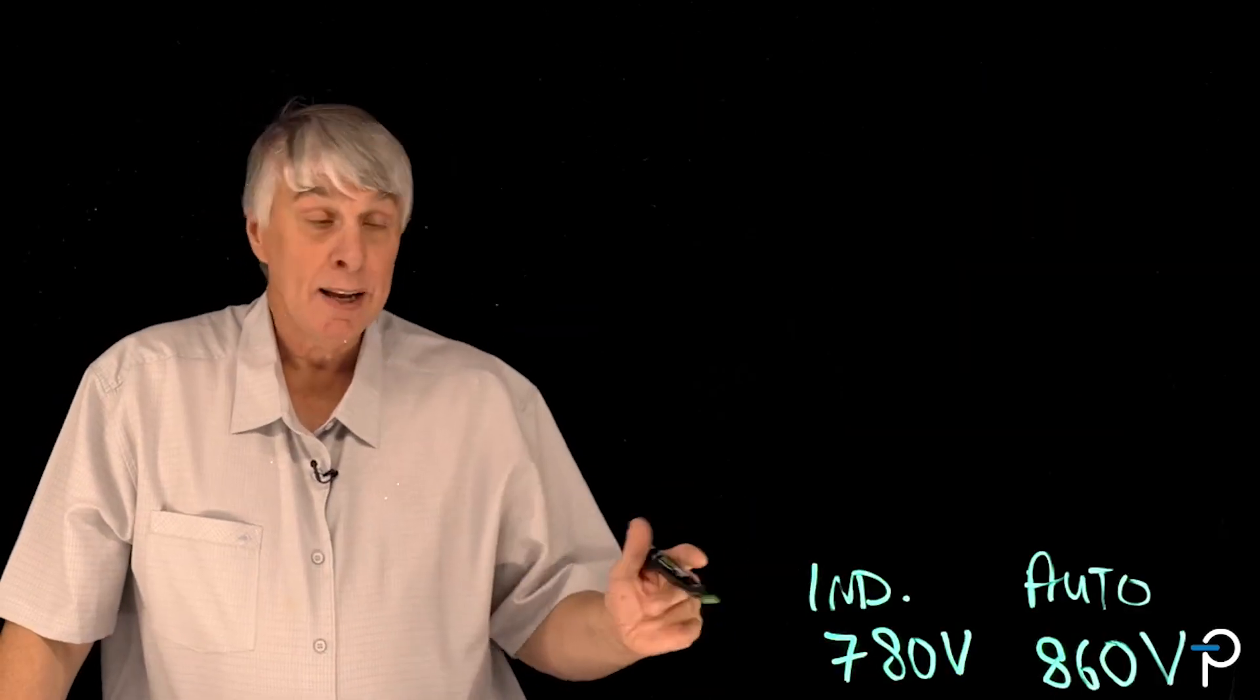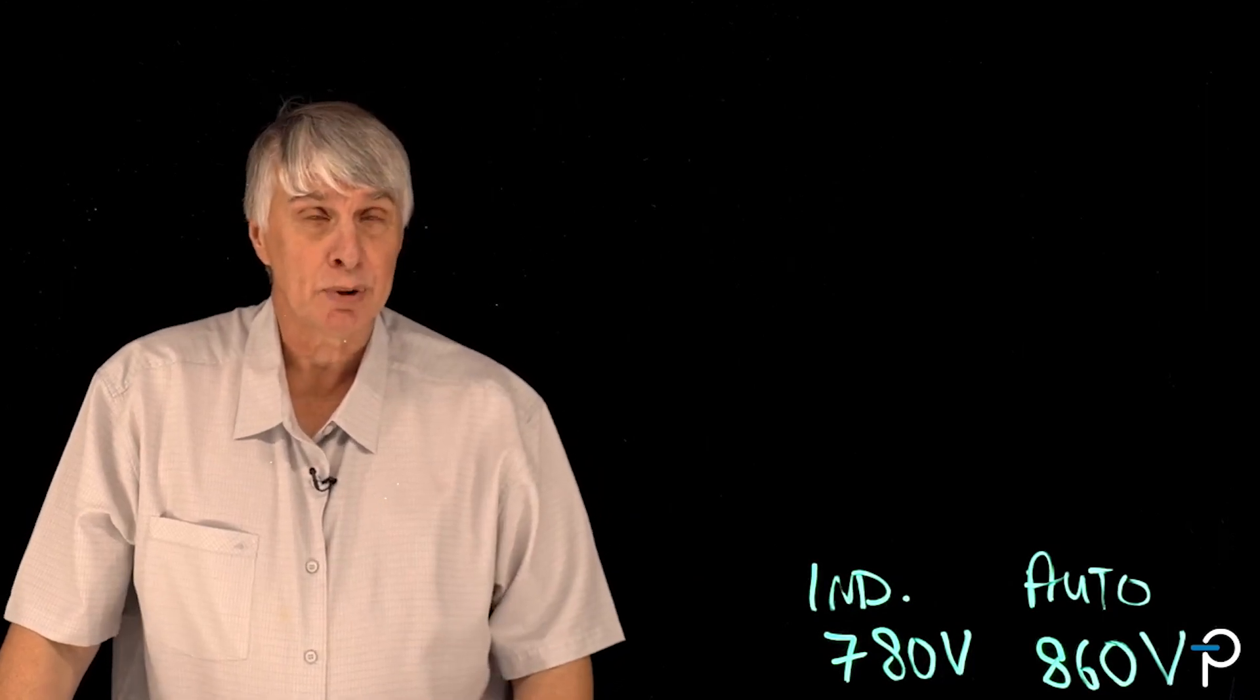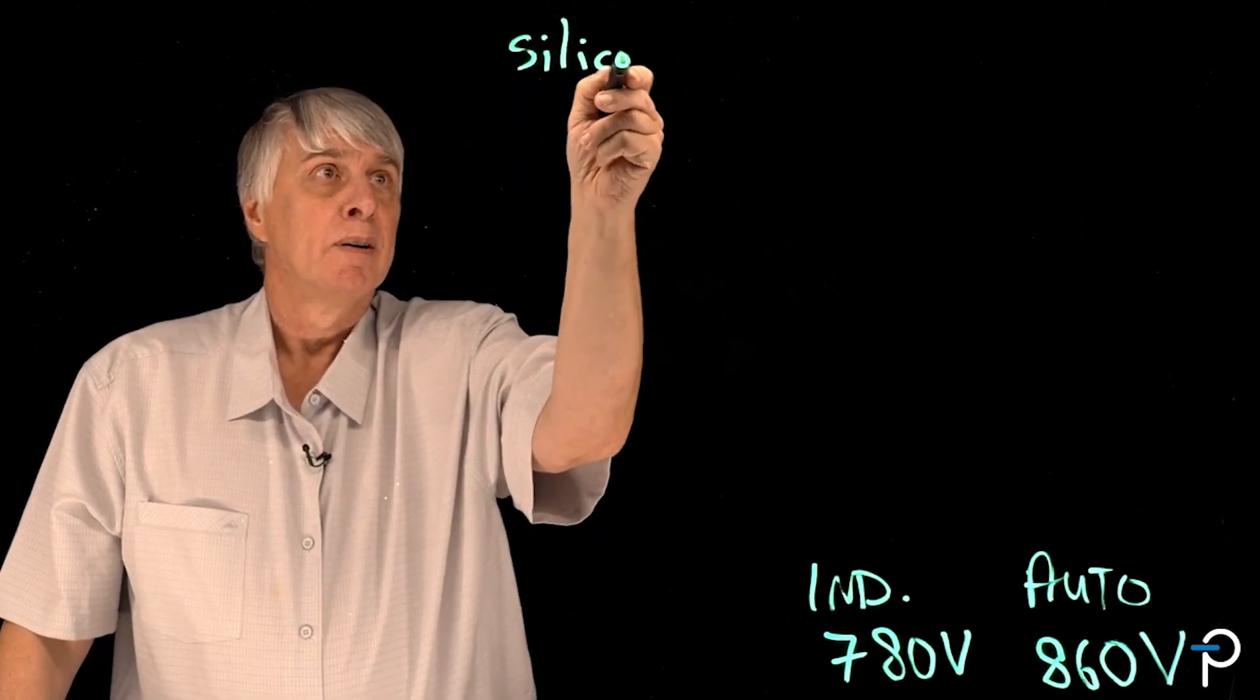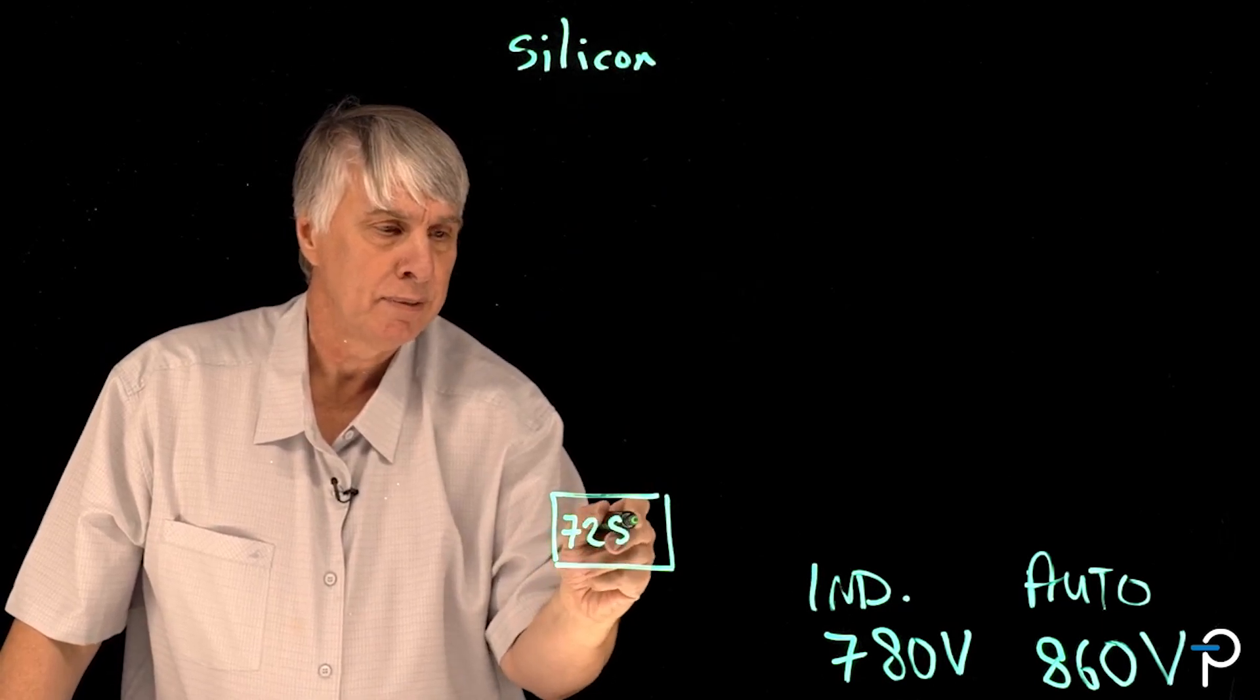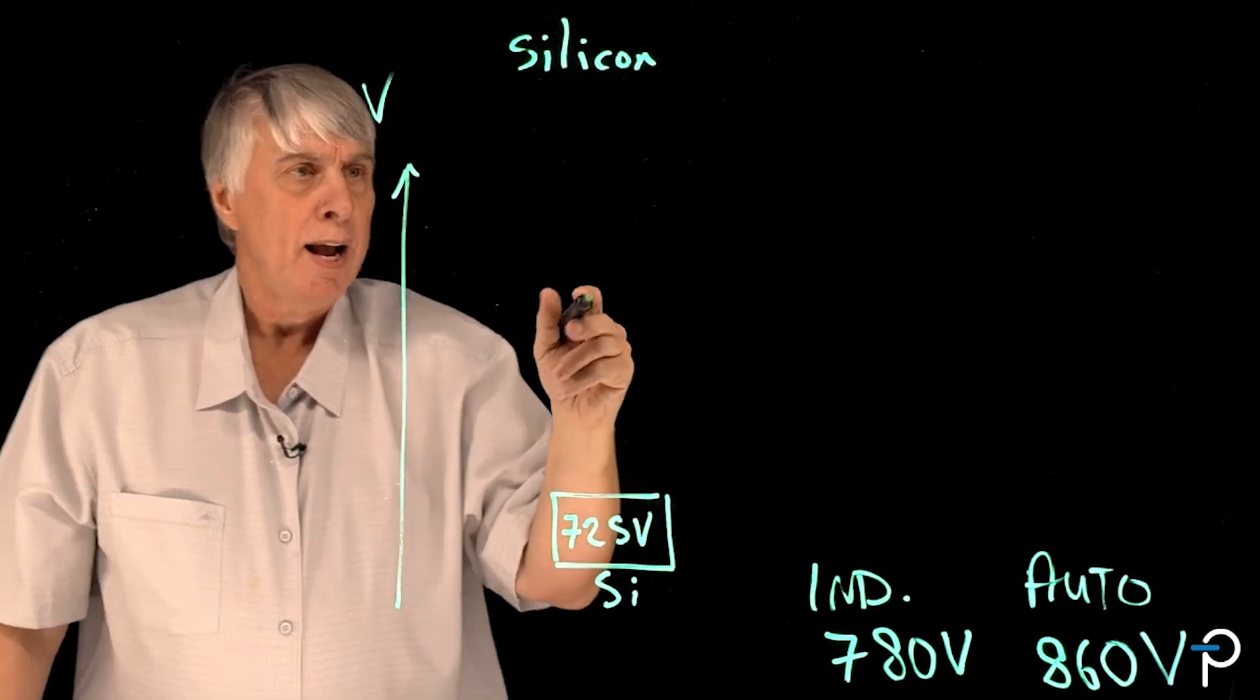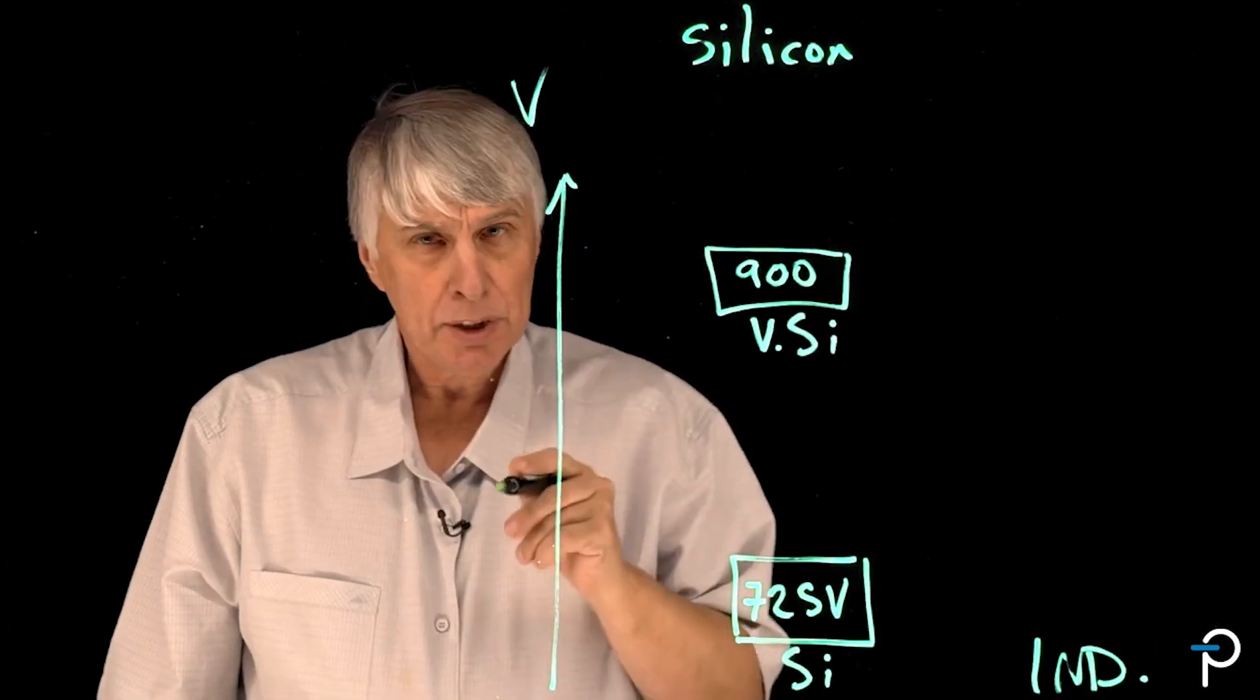I've cleared the board again but I've kept the voltage value so we know what we're aiming for. Now let's look a little bit about the different technologies we have available today. If I look first of all at silicon, we have 725 volts silicon and I'm going to use a vertical scale of voltage here and we have 900 volt silicon.